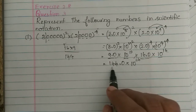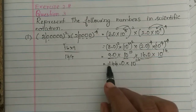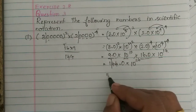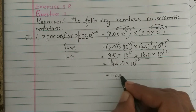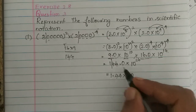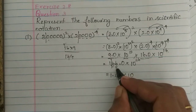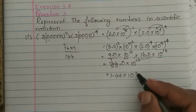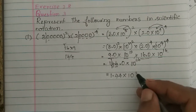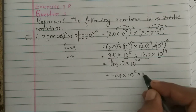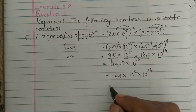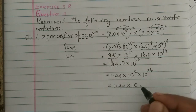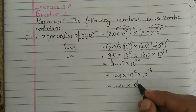Now this is our scientific notation. Since 144 is a whole number, we move the point to get 1.44 × 10 to the power 2. Because the number is greater than 1, the power is plus, so we multiply by 10 squared × 10 to the power 26, which equals 1.44 × 10 to the power 28.